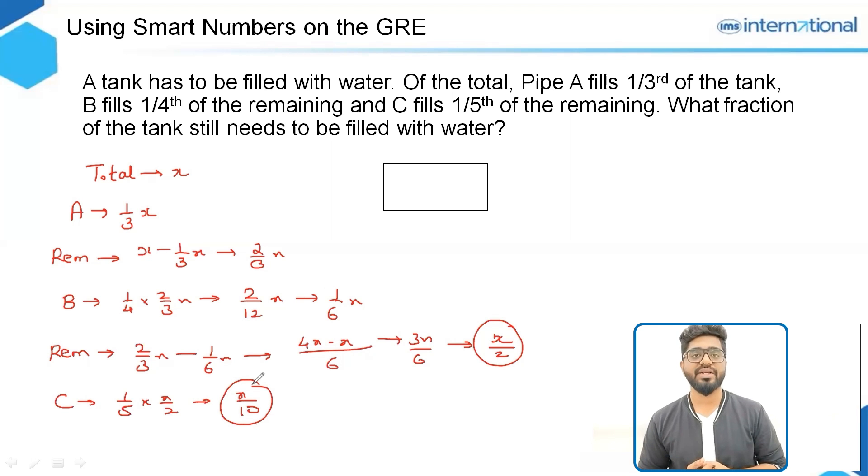The question is what fraction of the tank still needs to be filled with water. On finding the remaining part that still needs to be filled, this equals x over 2 minus x over 10. Taking 10 as the LCM, this is 5x minus x over 10, which is 4x over 10.